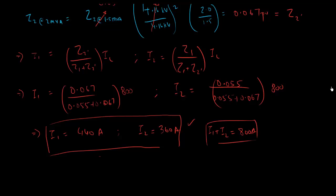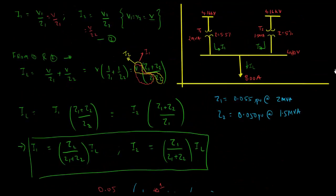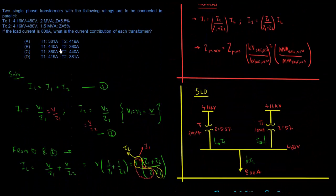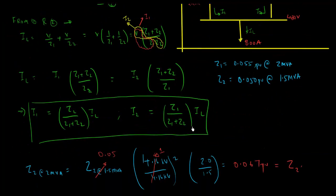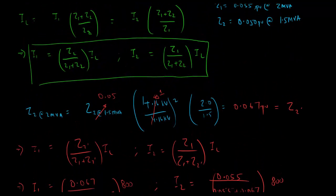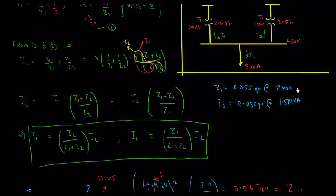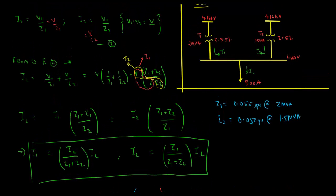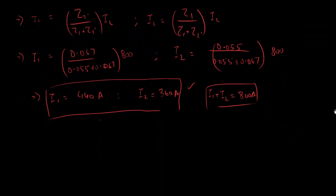We can verify: I1 + I2 = 440 + 360 = 800 amps — correct. Looking at the answer choices, T1 = 440 A and T2 = 360 A corresponds to option B. Note that options showing 381 A and 419 A are what you'd get if you use Z2 without converting the bases — a common mistake to avoid.